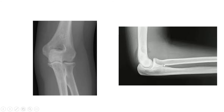Now here this is the superior radioulnar joint, which is a pivot variety of synovial joint. At this joint, the supination and pronation movements occur. This is the interosseous border of the radius, and this is the interosseous border of the ulna.